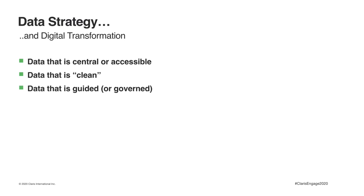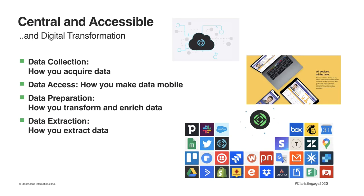Getting your data in order is not the exciting part of digital transformation, but think of it as the Marie Kondo piece — when your data is central, clean, and guided, it will spark more joy for your organization and customers. You need data that's central, accessible, and clean — it's gone through a process of detecting, correcting, and removing corrupt or inaccurate data. Your data also needs to be governed. FileMaker is well suited for this data strategy and works across multiple platforms and devices, facilitating centralized and accessible data. This is the core value of automating a single source of truth — reporting, budgeting, and forecasting are automatically updated, consistent, accurate, and timely.